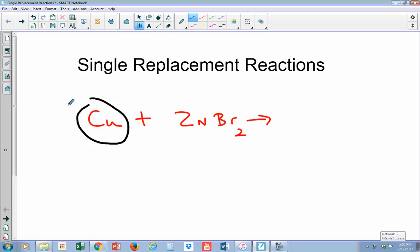So in this case we can see that copper, copper metal in elemental form, is pretty much by itself and it's reacting with a regular molecule here, a cation and anion, zinc bromide. But it was that copper by itself that was the real hint.